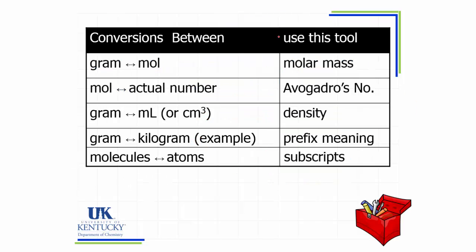As we've gone through doing a variety of calculations, we've talked about different ways we can relate values to one another. We've looked at prefix meanings from gram to kilogram, milligram, and nanogram. We can use density to help us get between grams and milliliters or centimeters cubed — remember that one milliliter equals one centimeter cubed. We've used moles and Avogadro's number to find out how many of something we had, and we've used molar mass to get between grams and moles. Now we have another tool to add to our toolbox: relating the number of molecules to the number of atoms, in terms of individual molecules or in terms of moles of molecules and moles of atoms.